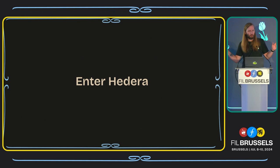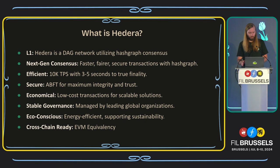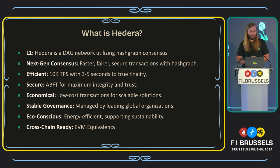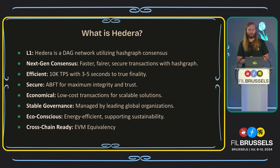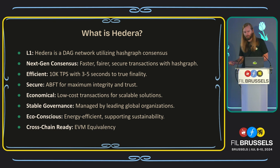So that's all the problems. What are the solutions? Enter Hedera. If you're not sure what Hedera is, it is an L1 — a DAG network utilizing Hashgraph consensus. It's a next-gen consensus algorithm, so it offers faster, fairer, secure transactions. It is asynchronous Byzantine fault tolerant, which gives it faster and more secure execution and brings efficiency. It can go up to 10,000 TPS throttled, up to 100,000 when the throttle is removed, and it gives you three to five seconds to true finality.